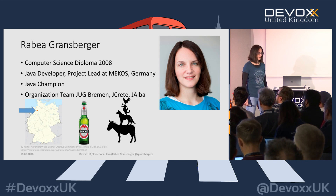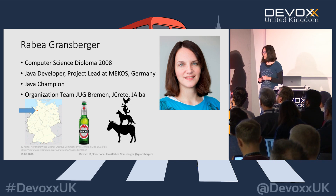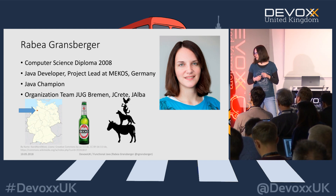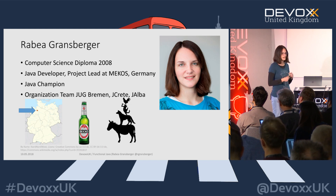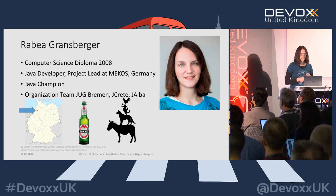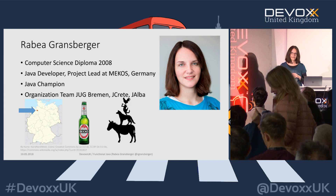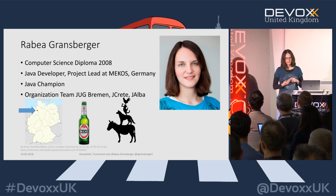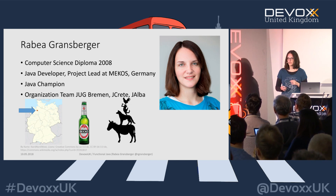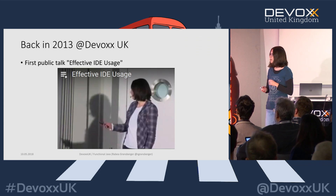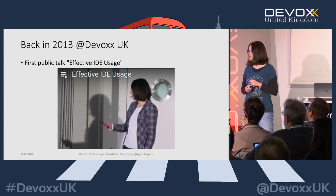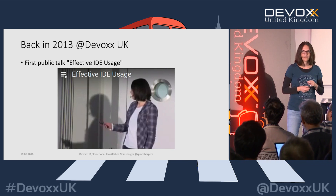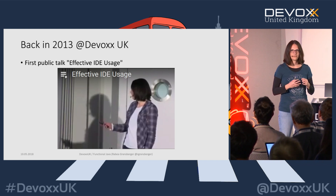My name is Rabea, I'm from the city of Bremen in Germany, which is probably more known for its beer and the story of the Bremen town musicians. I'm working at a smaller company called Makers in Bremen — we mainly do IT stuff but have a small software development team. I was also named Java Champion at the end of last year, and this is how I actually started public speaking — five years ago here at Devoxx UK.